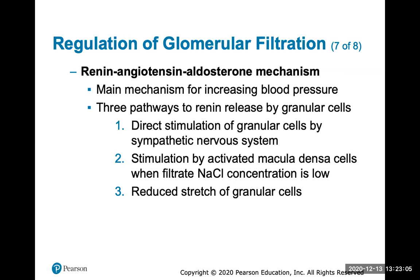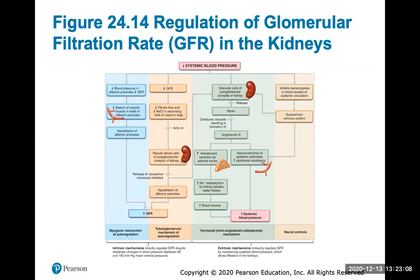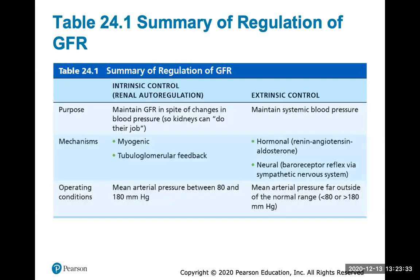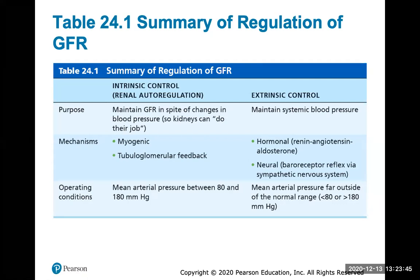There are three pathways to renin release: direct stimulation of granular cells, stimulation by activated macula densa cells when sodium chloride concentration is low, or reduced stretch of the granular cells. The main goal of the renin-angiotensin-aldosterone system is to increase blood pressure. Renal cells can also make their own locally acting angiotensin and angiotensin II, whose purpose is to vasoconstrict the arteries. Here is a summary of the regulation of glomerular filtration rate.